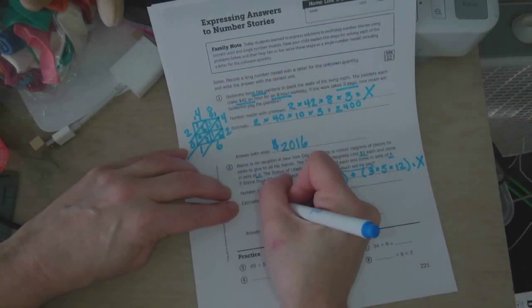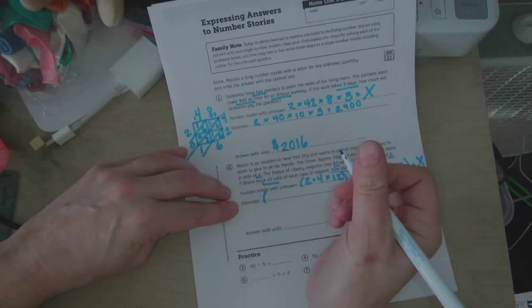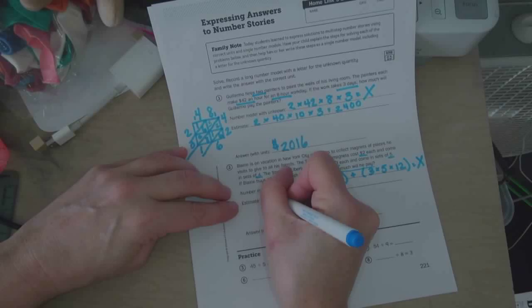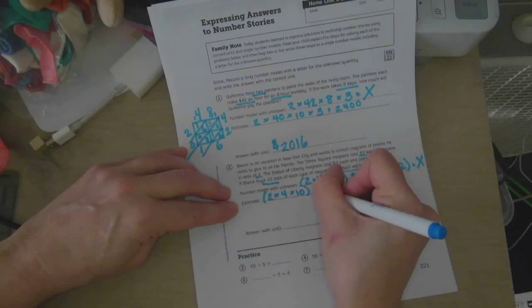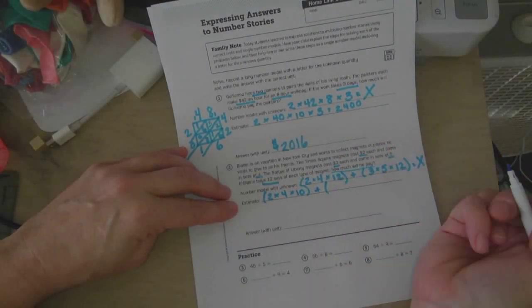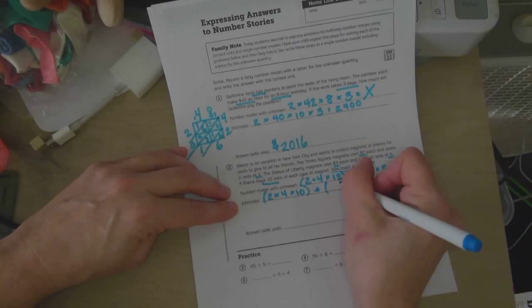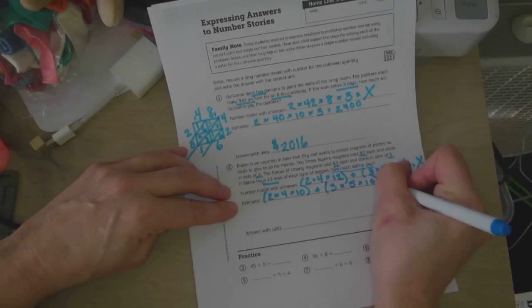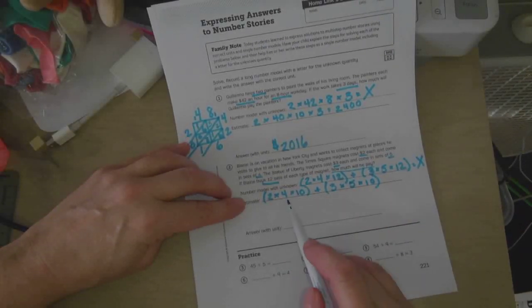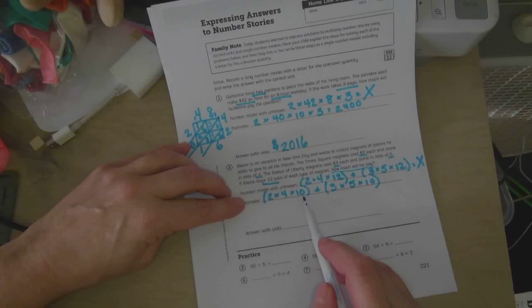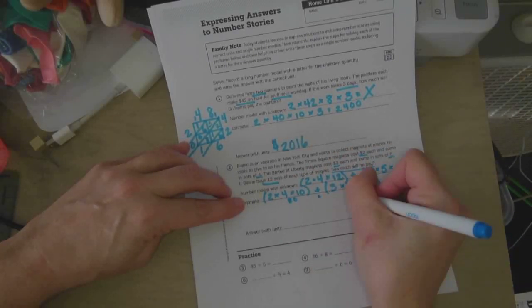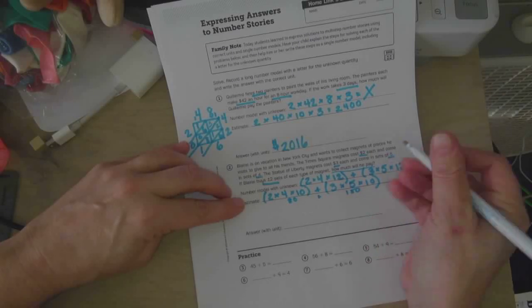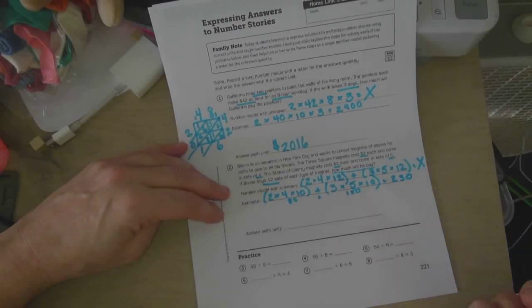So our estimate can be 2 times 4 times 10 plus 3 times 5 times 10. I guess 10 is a little bit easier than 12. So 2 times 4 times 10, 2 times 4 is 8, times 10 is 80, plus 3 times 5 is 15, times 10 is 150. So 150 plus 80 is 230. So that's our estimate.